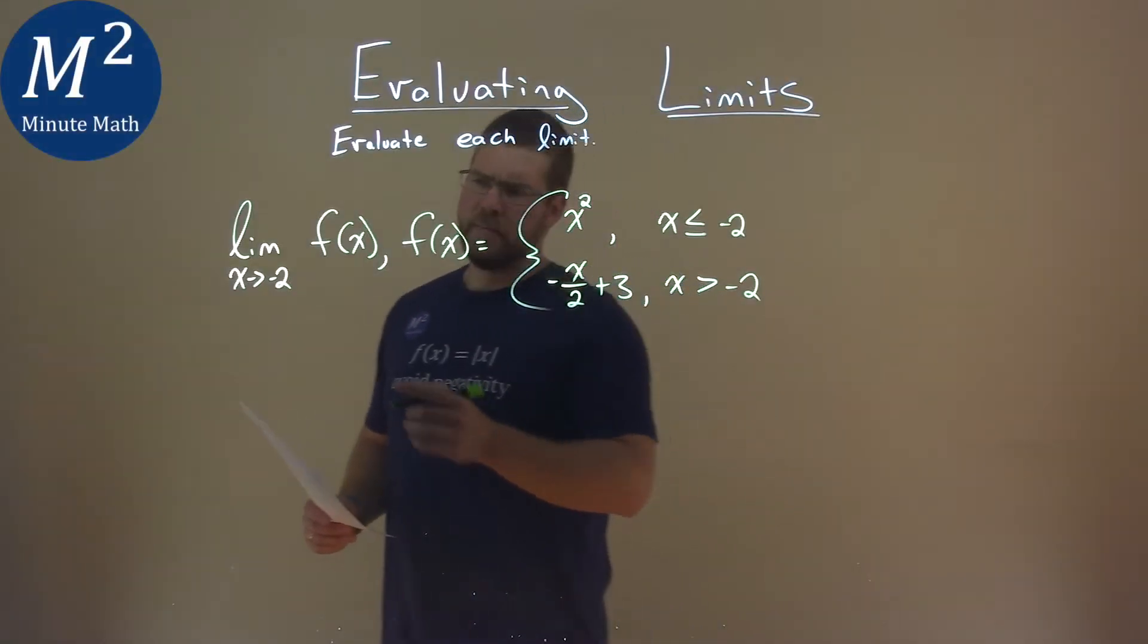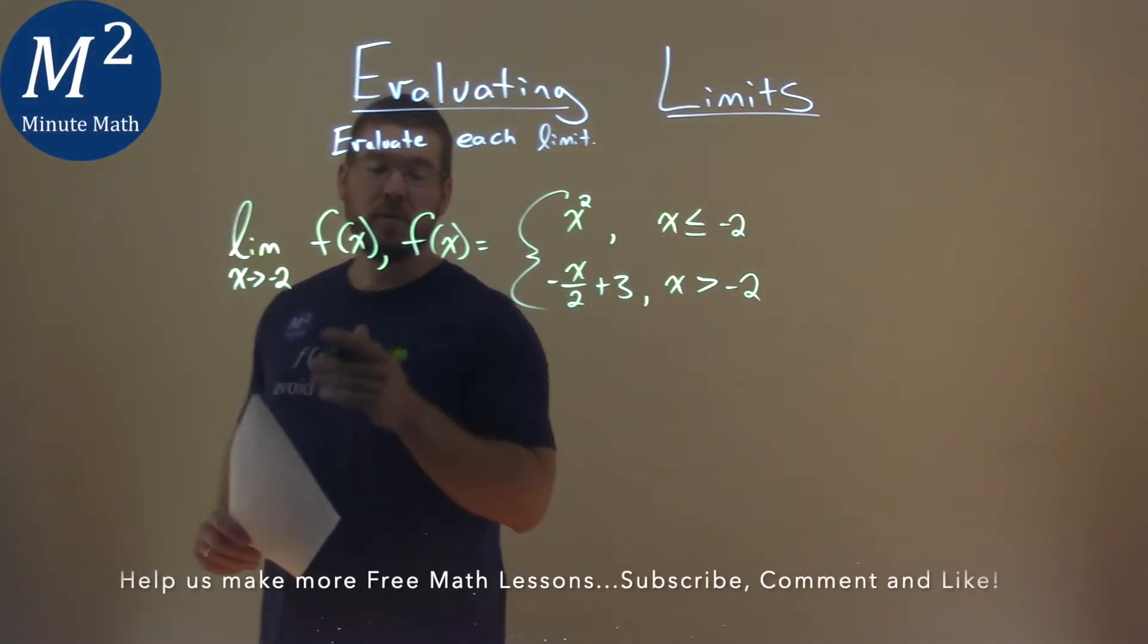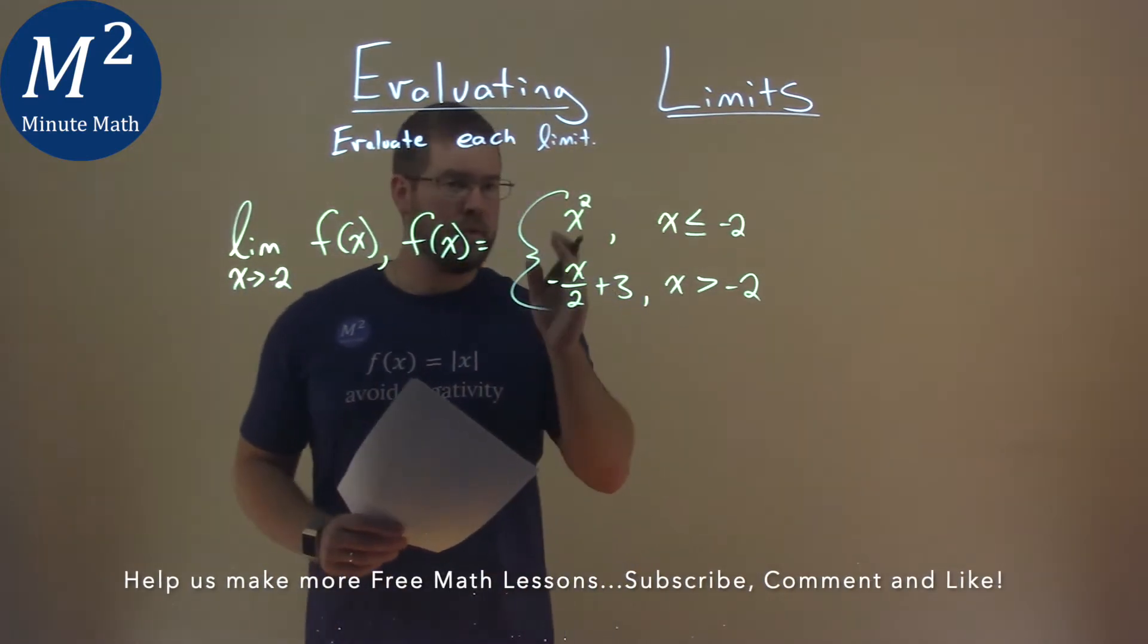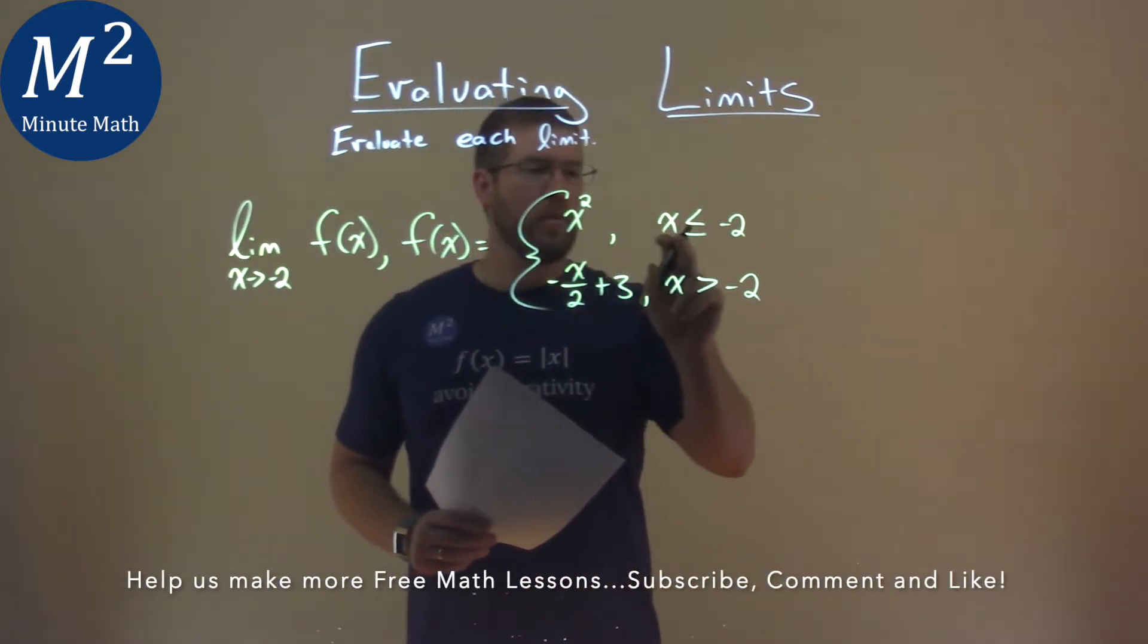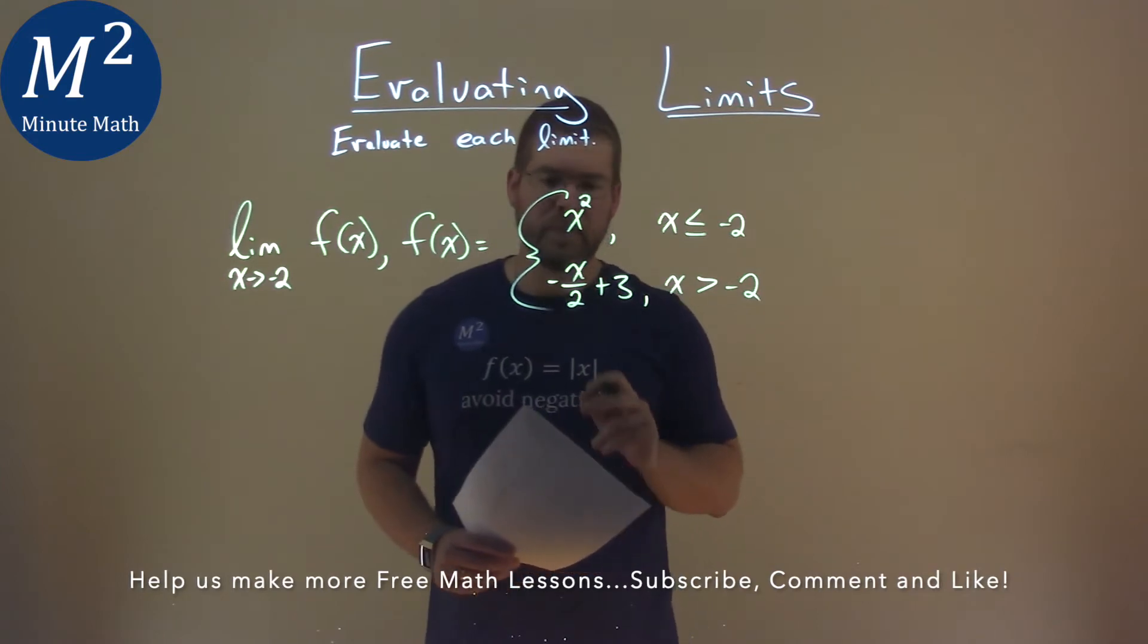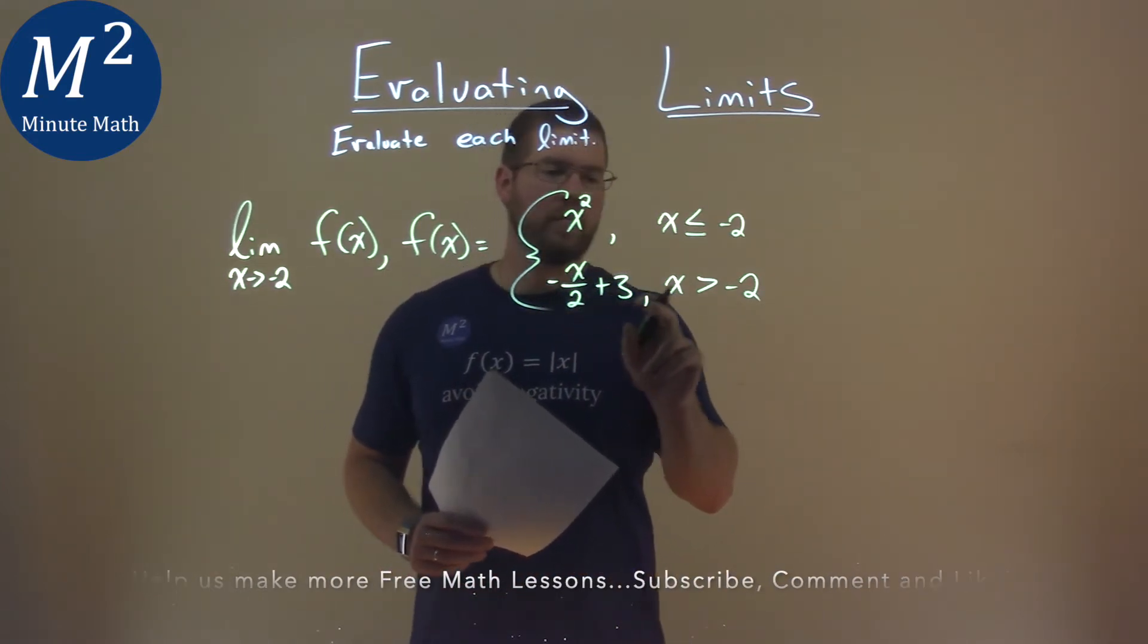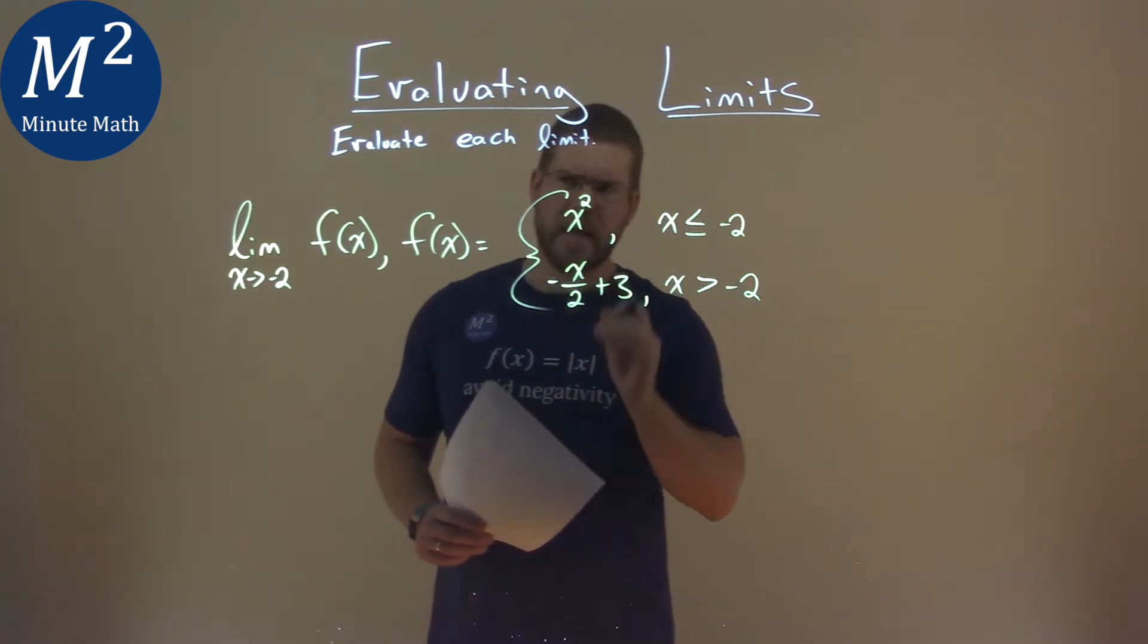We're given this problem right here, the limit as x approaches negative 2 of f of x, where f of x is equal to the piecewise function x squared where x is less than or equal to negative 2, and negative x over 2 plus 3 when x is greater than negative 2, and we have to evaluate this limit.